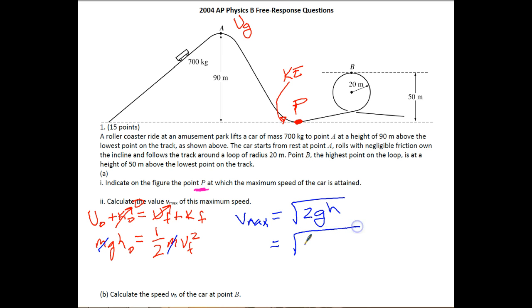Let's go ahead and plug everything into the equation. So we've got 2 times 10. Notice that our height here is 90 meters, and that's where that comes from. And if you plug everything in, you should end up with 42.4 meters per second. And that is your final answer for part A, double I.